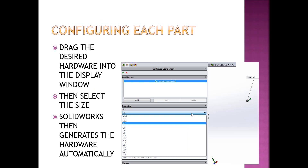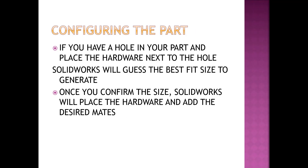When you configure each part, drag the desired hardware into the display window, then select the size, and SOLIDWORKS will generate the hardware automatically. If you have a hole in your part and you place the hardware next to the hole, SOLIDWORKS will guess the best fit size to generate. Once you confirm the size, SOLIDWORKS will place the hardware and add the desired mates.